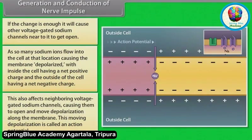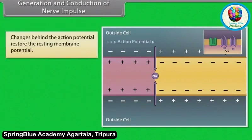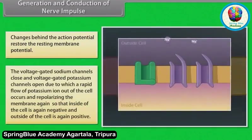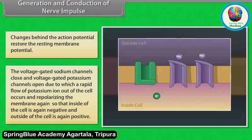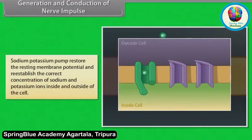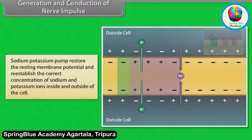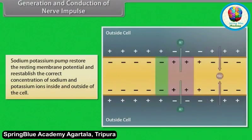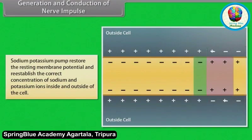When a stimulus disturbs the plasma membrane on a dendrite, a nerve impulse begins, causing opening of sodium channels. As so many sodium ions flow into the cell, the membrane becomes depolarized, with the inside having a net positive charge. This also affects neighboring voltage-gated sodium channels, causing them to open and move depolarization along the membrane — this moving depolarization is called an action potential. Changes behind the action potential restore the resting membrane potential: voltage-gated sodium channels close, voltage-gated potassium channels open, potassium ions flow out rapidly, and the sodium-potassium pump re-establishes correct ion concentrations.